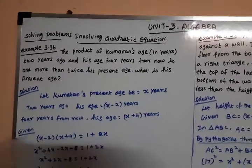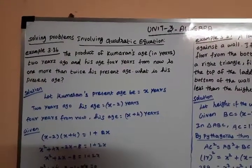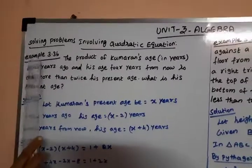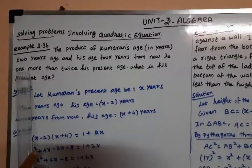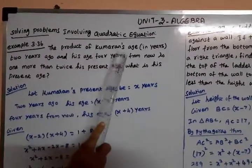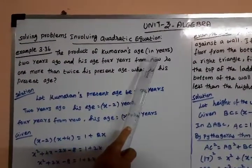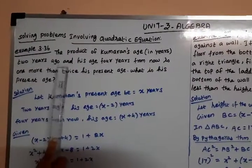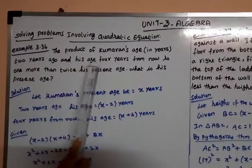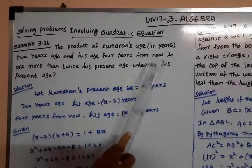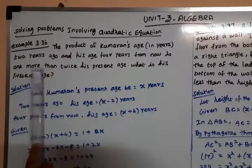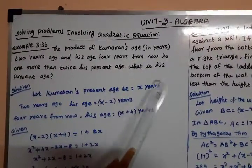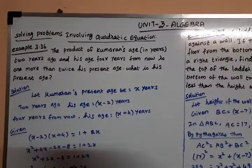Once we convert the statement into a quadratic equation, we can follow any method we can follow to find the solution. Example 3.36: The product of Kumaran's age in years two years ago and his age four years from now is one more than twice his present age. What is his present age?